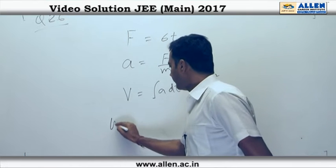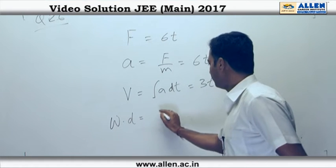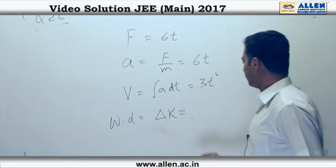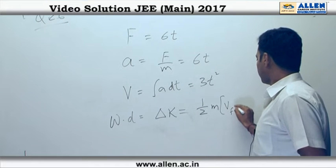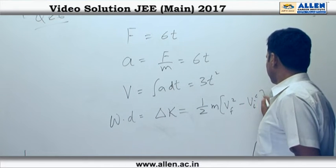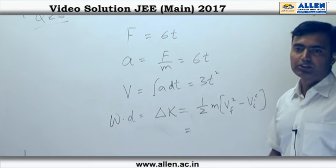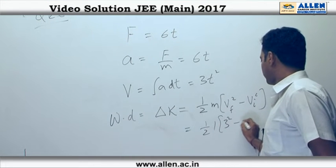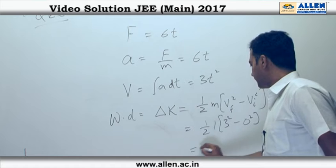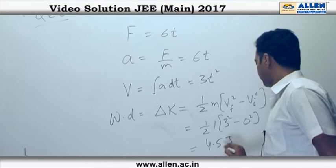Now work done is equal to change in kinetic energy which is half m v final square minus v initial square, initial velocity was 0, so this is what you have 1 into 3 square minus 0 square which is 4.5 joules